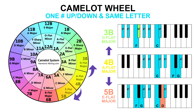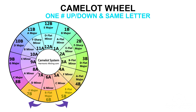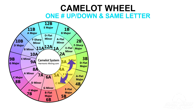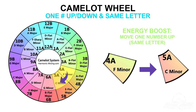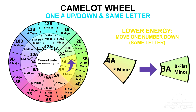All you have to remember with the Camelot wheel is that you can mix one number up or down from the number your original song is in, and just be sure to stick with the same letter, which means you're staying in the same ring of the wheel. This is a really cool technique if you want to give your dance floor a quick burst of excitement by stepping up a number clockwise to move to the next key, like moving from 4A to 5A. Likewise, if you're stepping down by going counterclockwise to one number lower, like mixing from 4A to 3A, it can lower the energy on the dance floor slightly.